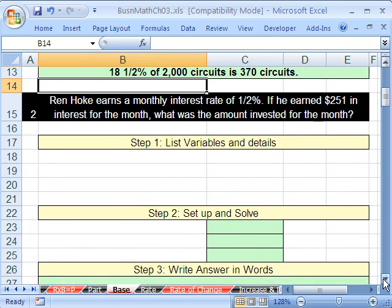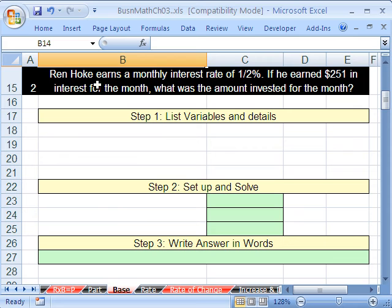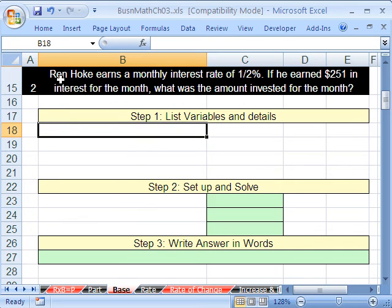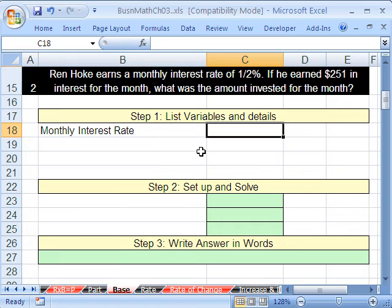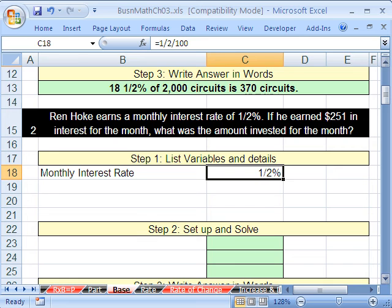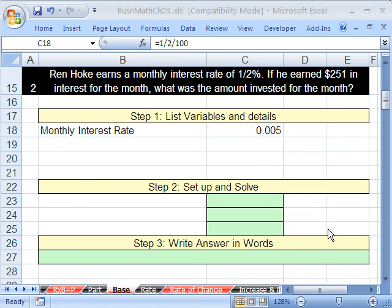Now let's do our second problem. Again we're solving for base. Ren Hoke earns a monthly interest rate of 1/2%. If he earns $251 in interest for the month, what was the amount invested for the month? Well it looks like we know the monthly interest rate, and that is 1/2%, so I'm going to do our little trick. Equals 1 divided by 2 divided by 100. Looks like I have it formatted already, we'll leave that one there.